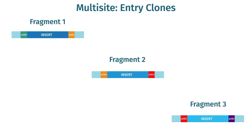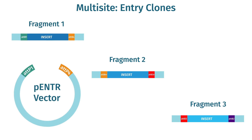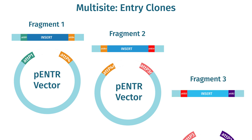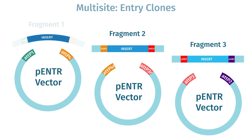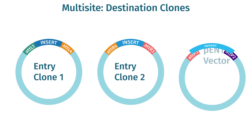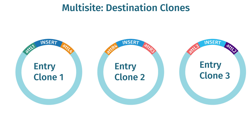As with standard gateway cloning, the first step starts with the BP reaction. In this case, multiple DNA fragments of interest are created that contain different pairs of flanking AT-B sites. To perform multi-site gateway cloning effectively, you need to plan how many fragments you wish to combine and in which order before choosing the correct entry and destination vectors. Each entry clone is built and sequence verified separately following the standard gateway cloning methods.